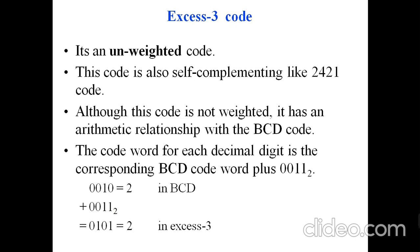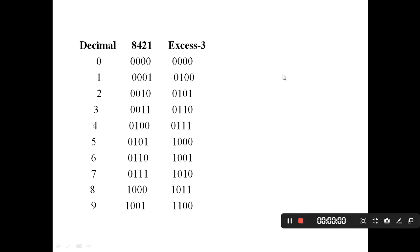The XS3 code is obtained by adding three — that is, binary 0011 — to the 8421 BCD code for each digit. For example, decimal two in 8421 BCD is 0010. Adding three, which is 0011, to 0010 gives 0101, which is the XS3 representation of decimal two. This is the logic for XS3: add three to every 8421 BCD value.